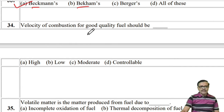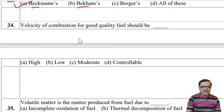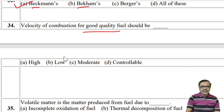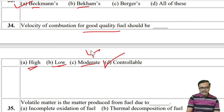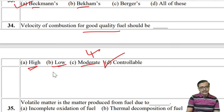The velocity of combustion for a good quality fuel should be mainly controllable — not just moderate, high, or low. If you need to increase speed it can be increased; if you need to minimize it, you can. So the velocity of combustion should be controllable.